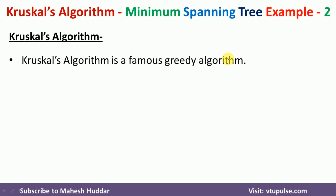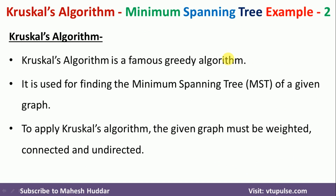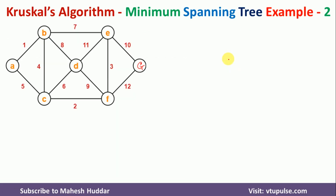Kruskal algorithm is a famous greedy algorithm which is used to find the minimum spanning tree. The given graph should be weighted, connected and undirected. In this example, I am going to consider this graph and then I will find the minimum spanning tree as well as the total weight of minimum spanning tree.